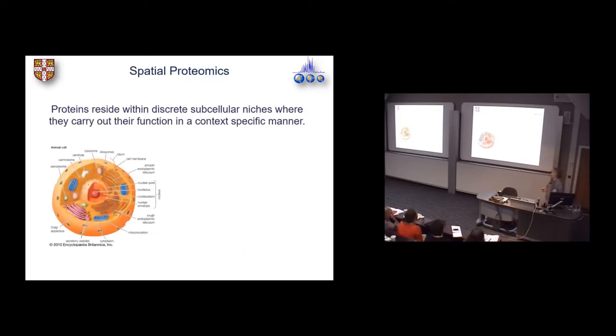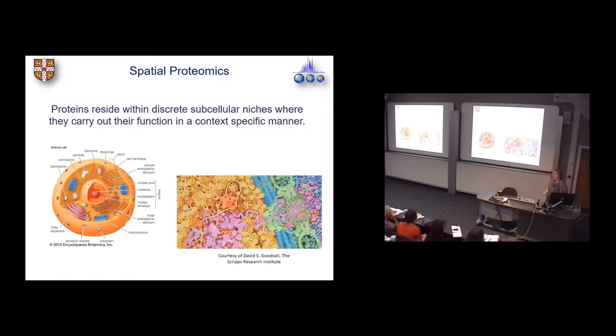What we are interested in in my lab is the spatial proteome. So that is why proteins get to the right part of the cell and what they do when they're there. You're all familiar with the way that cells are organized - higher organisms have got very complicated subcellular structures with many organelles, some membrane bound, some not. The proteins have got to get to the right place to carry out their function. And indeed the cell is remarkably crowded.